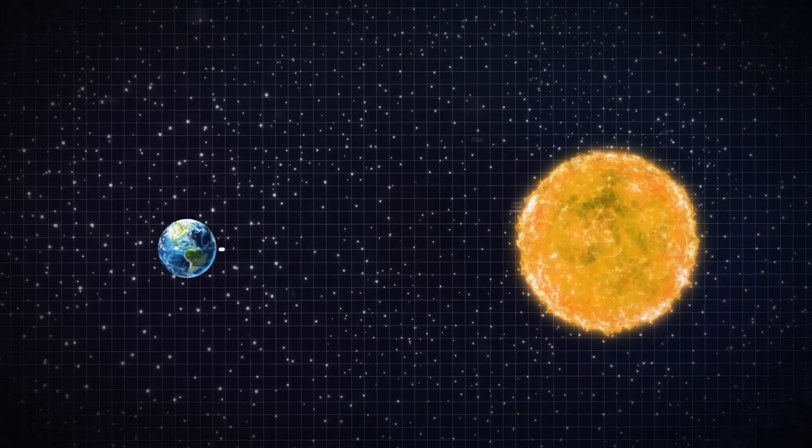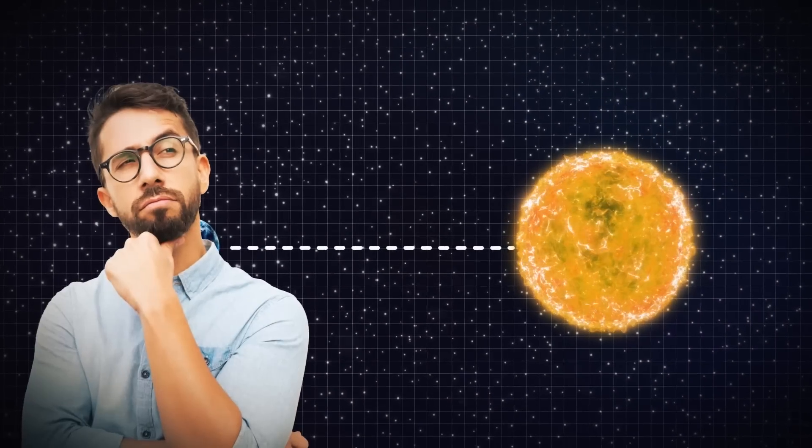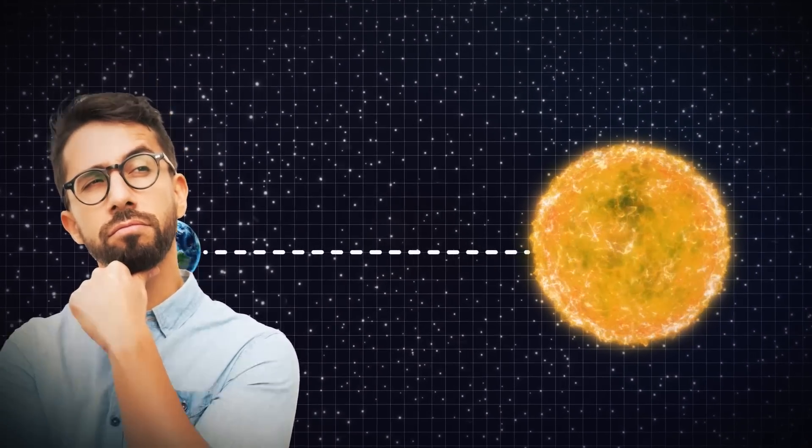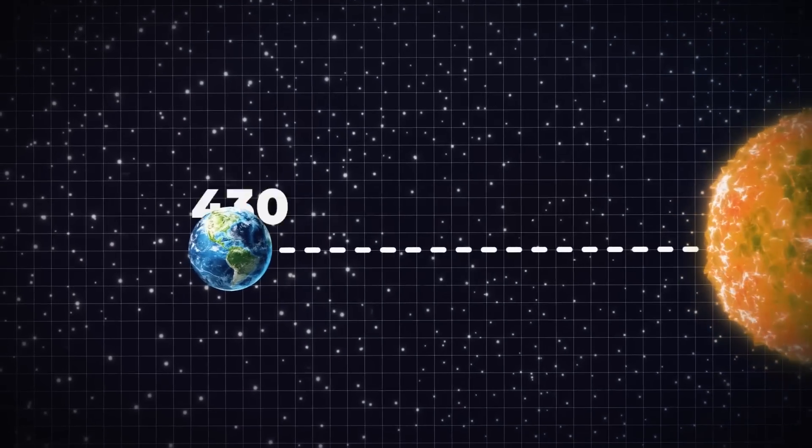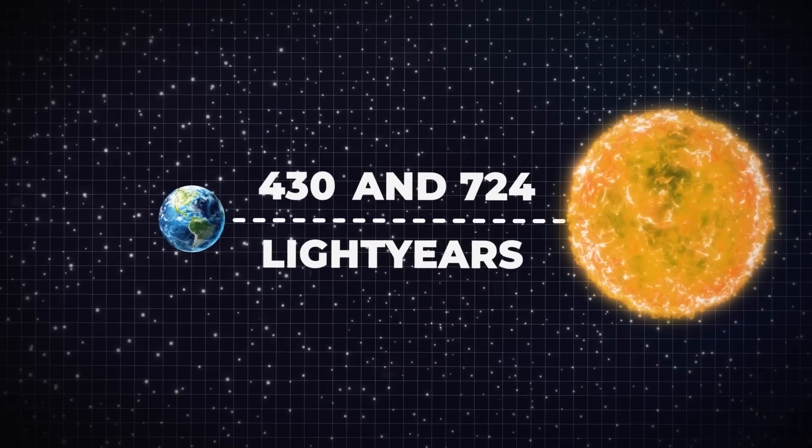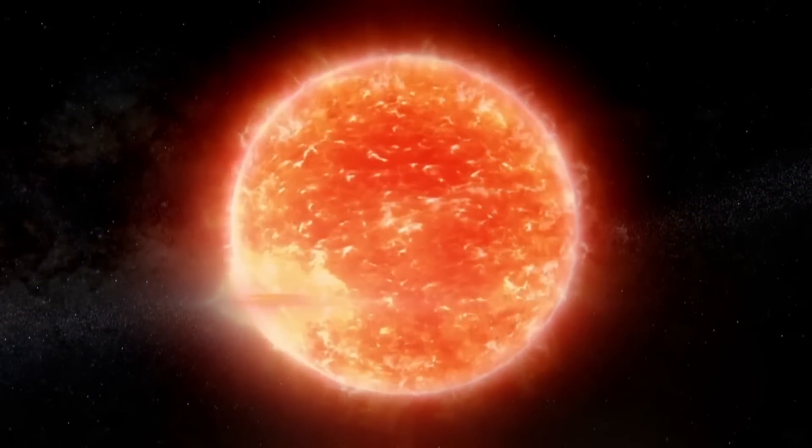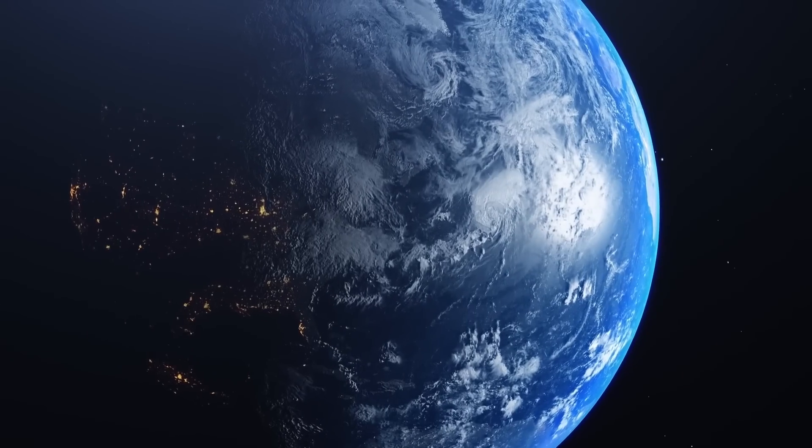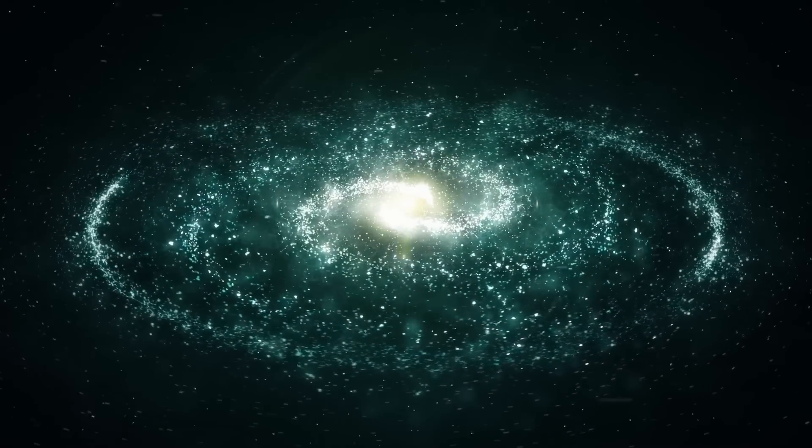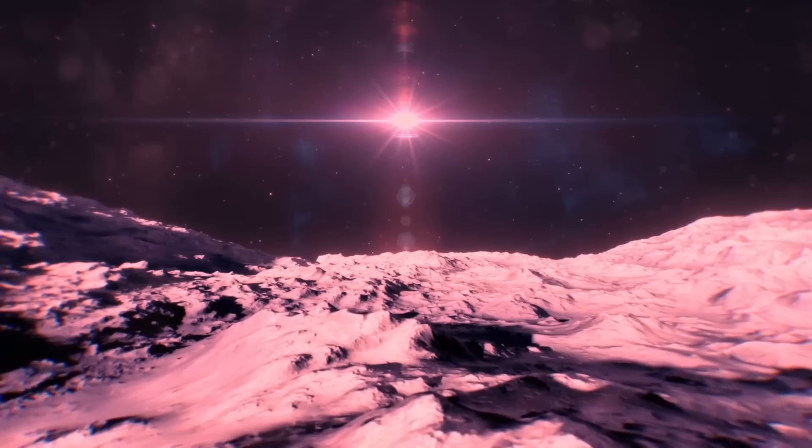Earth is relatively close to Betelgeuse. Astronomers are unable to pinpoint Betelgeuse's exact distance from Earth, although they believe it to be between 430 and 724 light-years away. Betelgeuse is the brightest red supergiant star and is closest to Earth. In our galaxy, there are just 200 red supergiant stars that have been identified.